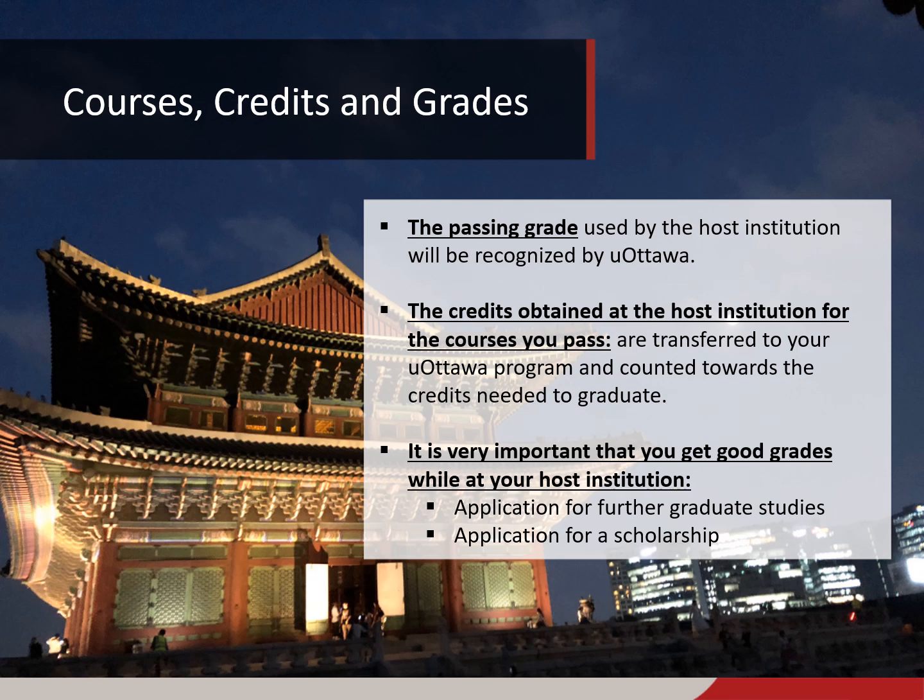Now let's move on to information about courses, grades, and transfer credits. When studying at your host university, you will need to take courses that count as course equivalencies in your program here at uOttawa. In order to get the credits transferred, you will need to show that you successfully passed your courses at your host university. The passing grade used by the host institution will be the one recognized by uOttawa. Your academic specialist and the faculty will handle the transfer credits, and the international office will provide them with your official transcript from your host university, including your grade and that university's grading scale. The course equivalencies will show on your uOttawa transcript with a grade of Pass or Fail.